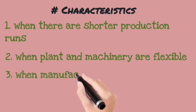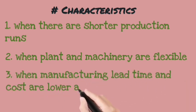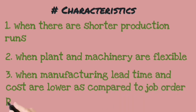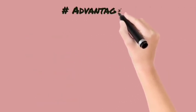Third, when your manufacturing lead time or cost is less compared to job order production. Manufacturing lead time is the time taken to make a product. Job order production is the process of manufacturing where you are working on a specific product.